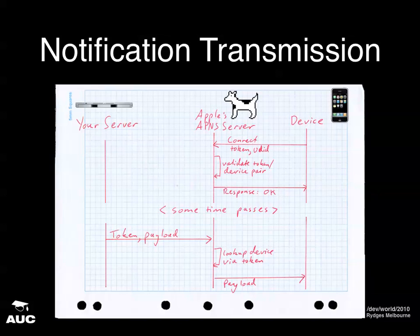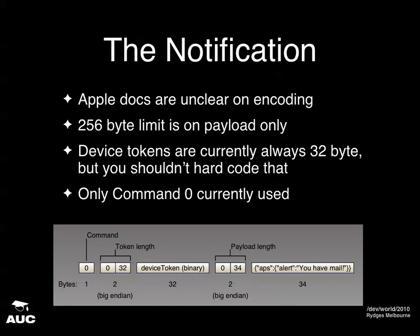Now let's look at the payload. It's a binary protocol, which Apple chose because on their side it scales much better — potentially you're talking about a lot of push notifications globally. But it means we have to be careful because it's not just text; it's something you can get aligned incorrectly. The Apple docs aren't that illuminating — they don't mention anything about encoding of the payload. It seems to be UTF-8, but they never actually state that.